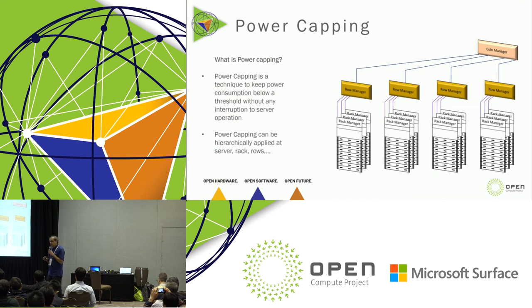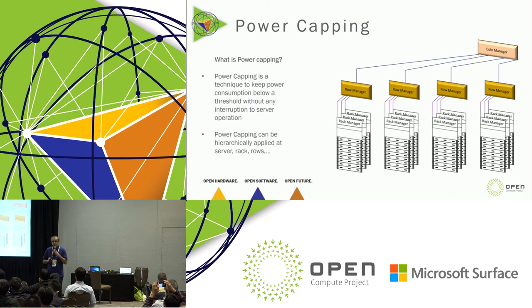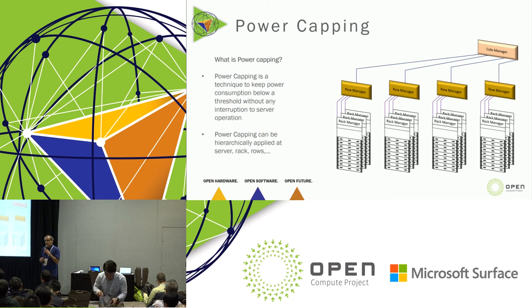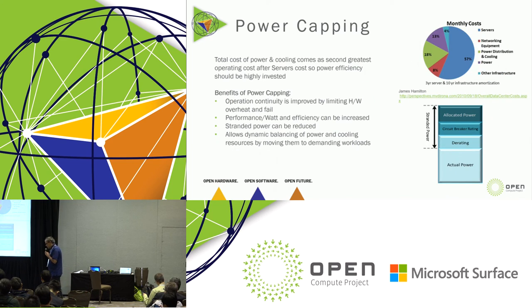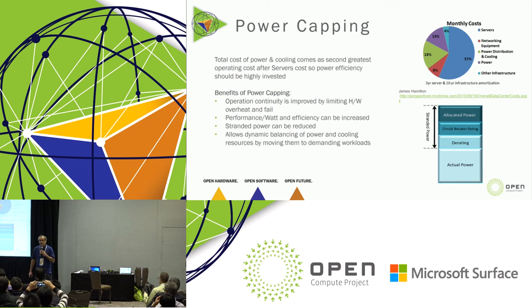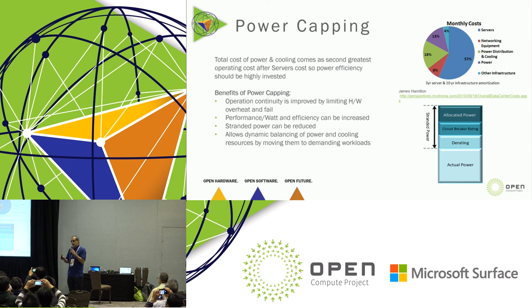With power capping, we are lowering the limit of power consumption. The idea is to keep the operation running — we don't want any interruption. But for a short period of time, a performance degradation is acceptable as long as there is no complete interruption to the service. As this graph shows, after server costs, the total cost of power — including electrical power and the power required for cooling — comes as the second greatest cost at the data center.